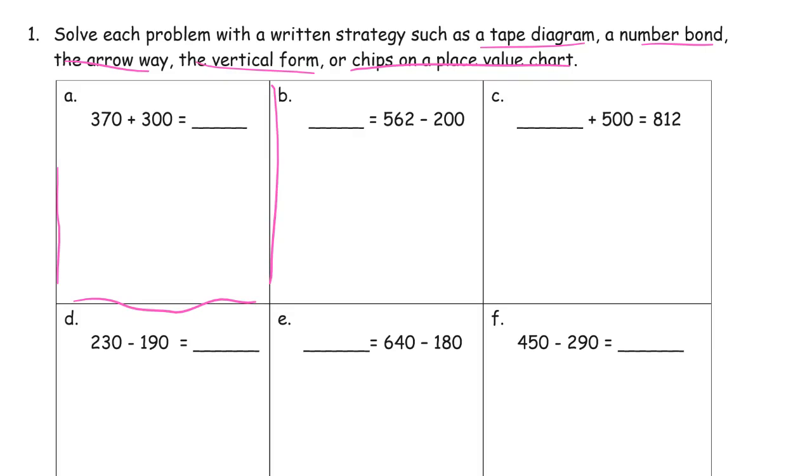370 plus 300. So I'm going to use a number bond strategy for this and just think of this 370 as 370. And so we have 300 plus 300, 600, 600 plus 70, 670.